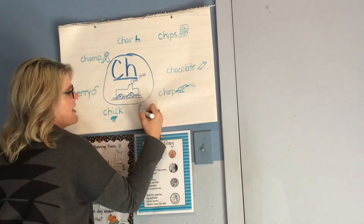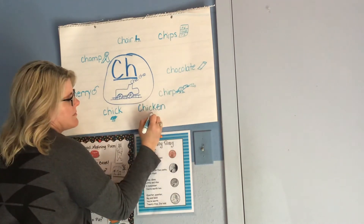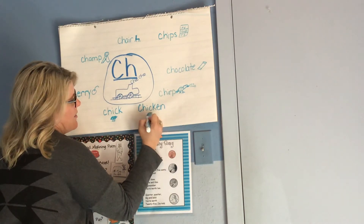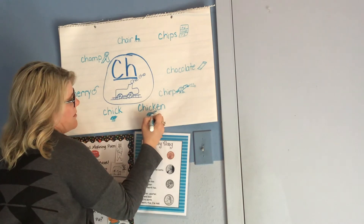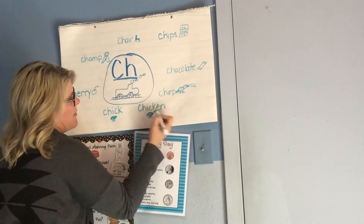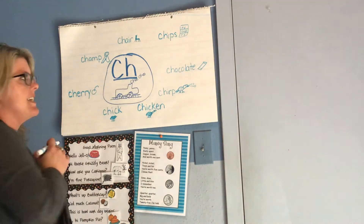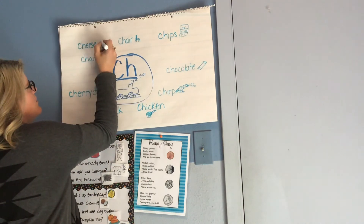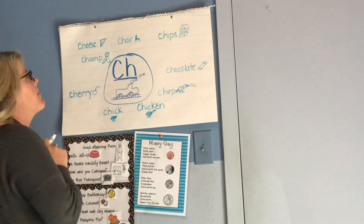What else? A chicken! I don't know if I'm going to be as good at drawing a chicken, but I will try. What about cheese? You like cheese? Ooh, I like cheese. Let's make a little square piece of cheese with holes in it.